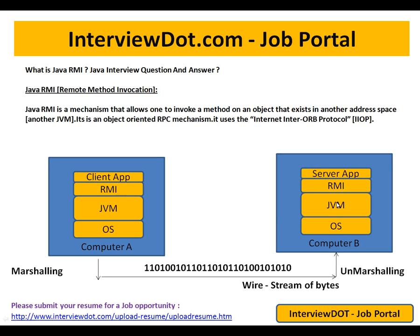You are going to use the IP address and port number to talk to the other computer. From the JVM it will be translated into a binary format, and when it leaves the computer it will travel as a signal in the wire — a stream of bytes. Marshaling is the process where we convert the object into a stream of bytes.